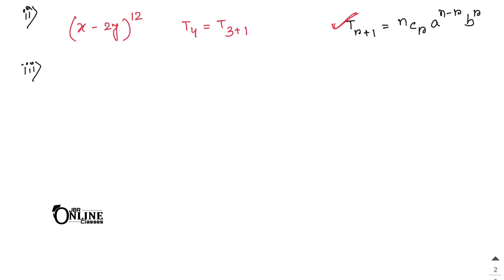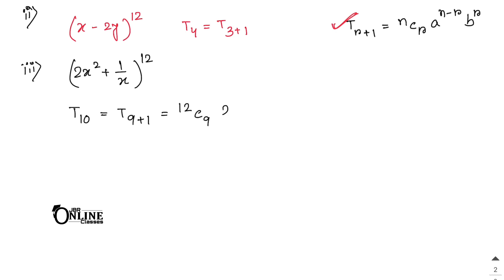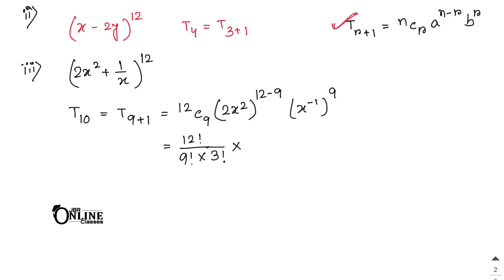Problem 2(iii): Find the 10th term of (2x² + 1/x)^12. T10 = T(9+1), so r = 9, n = 12. T(9+1) = 12C9 · (2x²)^(12−9) · (1/x)^9 = 12C9 · (2x²)^3 · x^(−9) = 12C9 · 2^3 · x^6 · x^(−9).